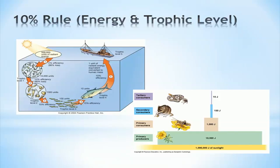For instance, plants are able to utilize about 1–2% of available solar energy. Primary consumers, such as insects, are only able to utilize 10% of the energy stored in plants. Secondary consumers, which feed on insects, are only able to utilize 10% of that energy, and so on. Generally, higher level consumers and apex predators have to consume more biomass than lower level consumers to stay alive.